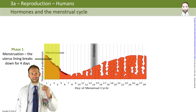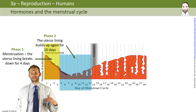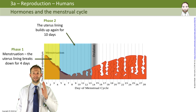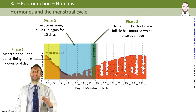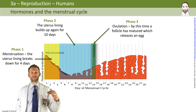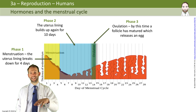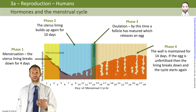Phase two is the uterus lining starting to build up again, building up for about ten days. Then phase three is ovulation, where an egg is released. Phase four is about keeping that uterus lining in perfect condition — maintaining it in case that egg is fertilized and implants in the uterus lining.